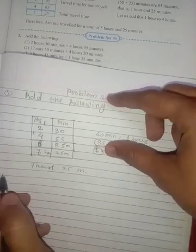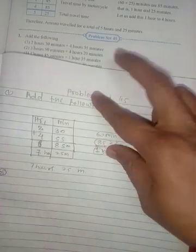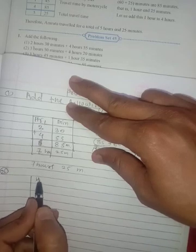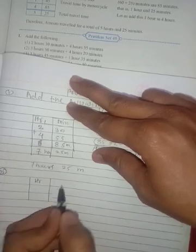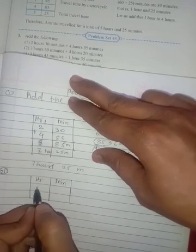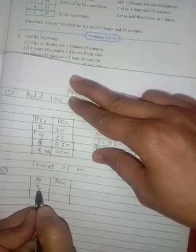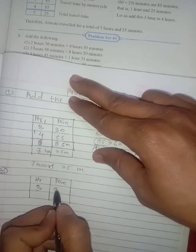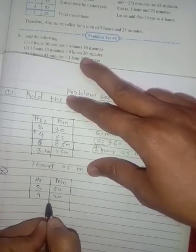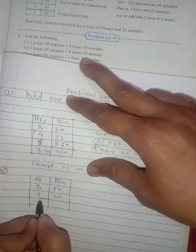Hope you understand. Now let's solve the next example. Again draw a table: HR means hours and minutes. It is 3 hours and 50 minutes, 4 hours and 20 minutes.